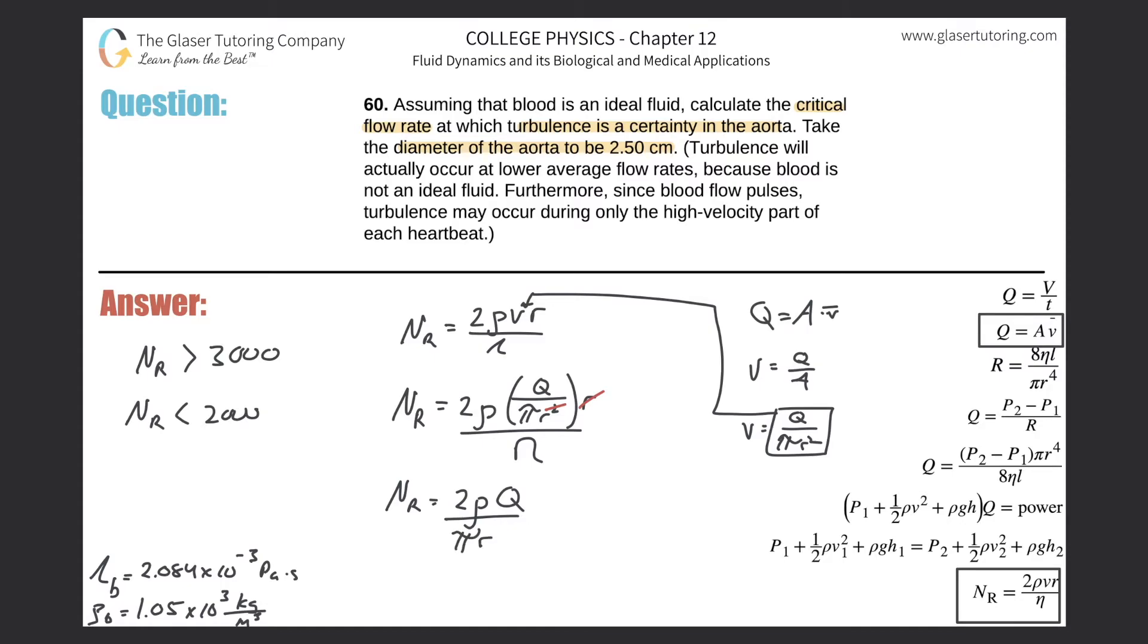What are we after? We're after finding the flow rate. So move everything away from Q. Anything in the denominator moves up to the numerator, anything in the numerator moves down to the denominator. Reorganize and voila.